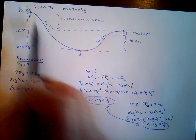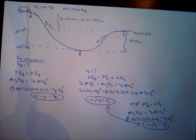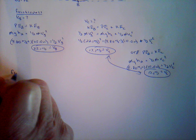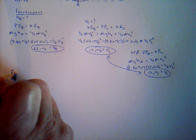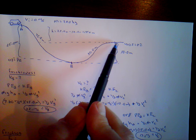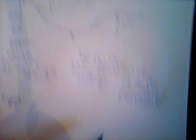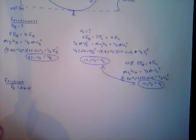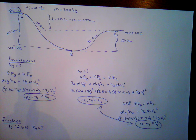Now let's add friction to the roller coaster. Any real roller coaster has friction between the wheels and the track. We'll say the friction force is 216 newtons. With this friction force acting over 45 meters from A to B, what is the velocity at point B? Without friction it was 22.1 m/s; with friction it will be less.